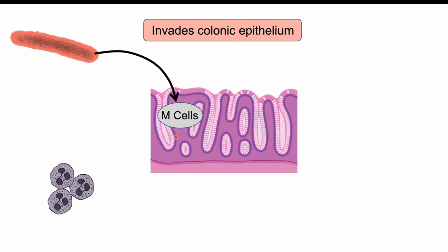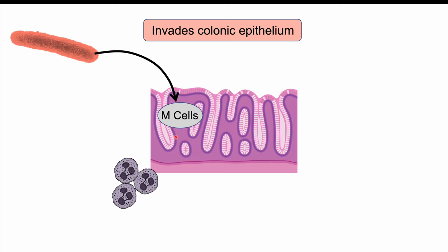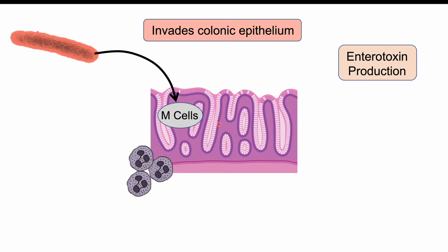Once they invade through M cells, the patient's immune system sends macrophages to the area. The macrophages can engulf the bacteria, but the bacteria can escape from the macrophages and cause further issues, including enterotoxin production.